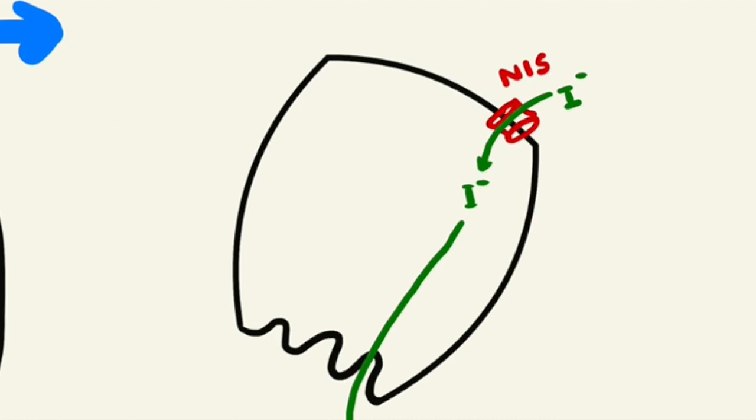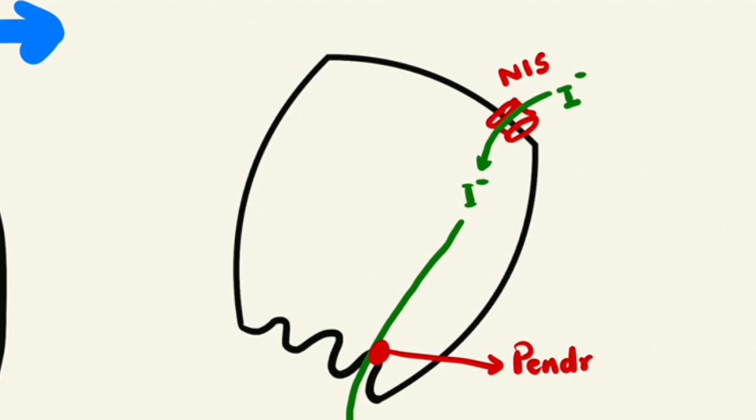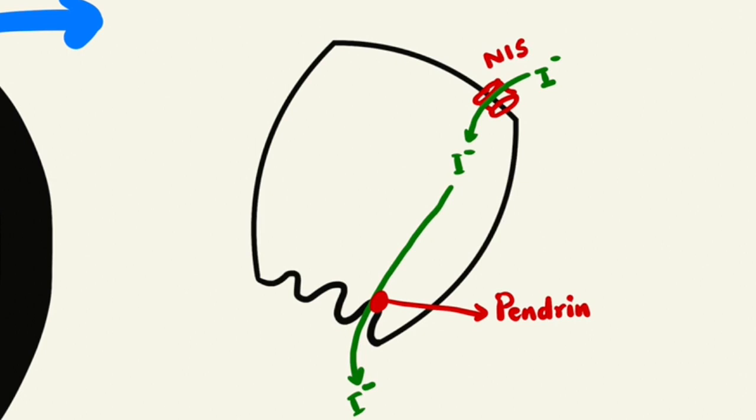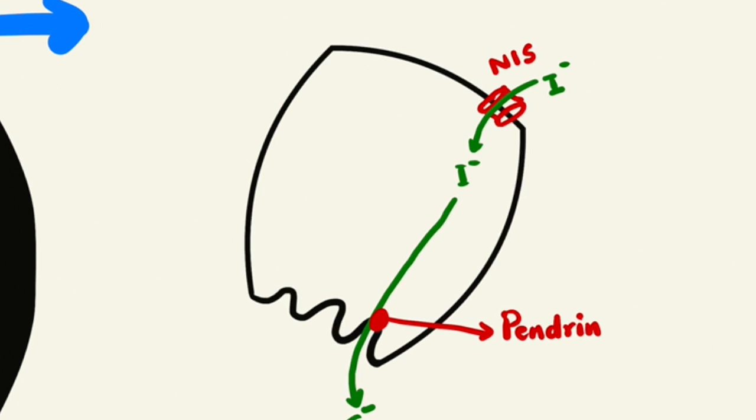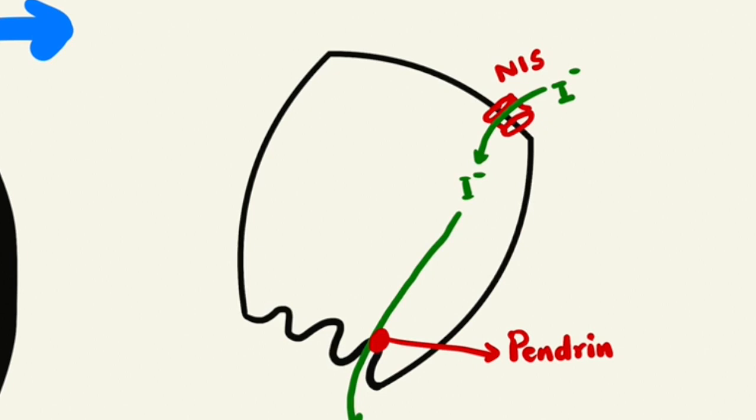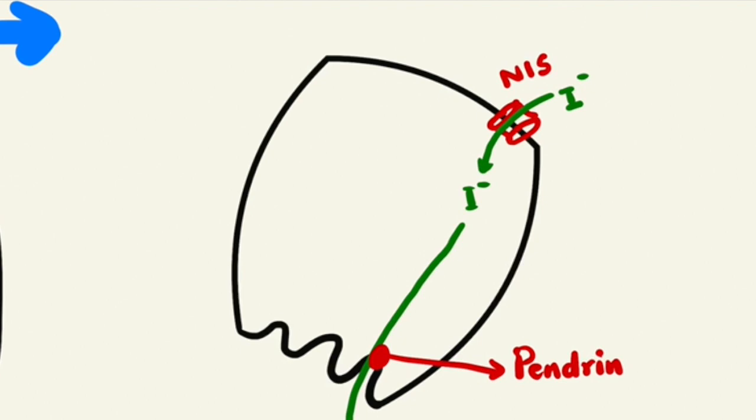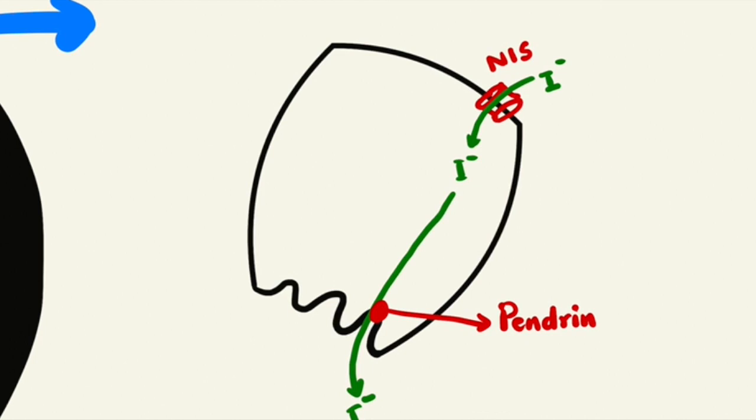This pendrin protein is coded by a gene called the pendrin gene. Mutation of this pendrin gene results in congenital hypothyroidism. The other component of Pendred syndrome is congenital hypothyroidism with SNHL — sensorineural hearing loss. SNHL occurs because the pendrin gene is also present in the cochlea, and hence mutation of this gene results in dysfunction of the cochlea leading to sensorineural hearing loss.